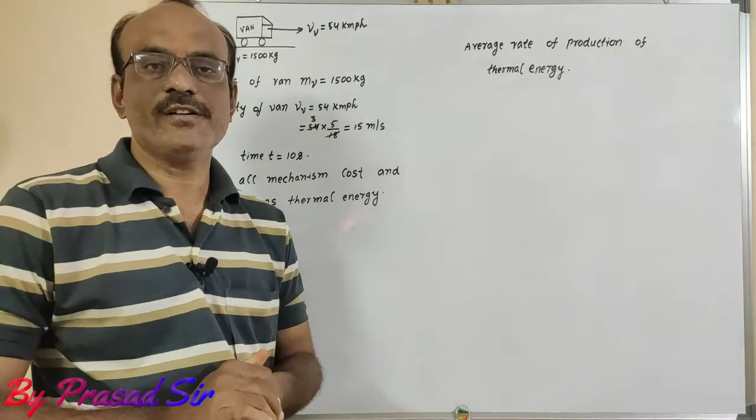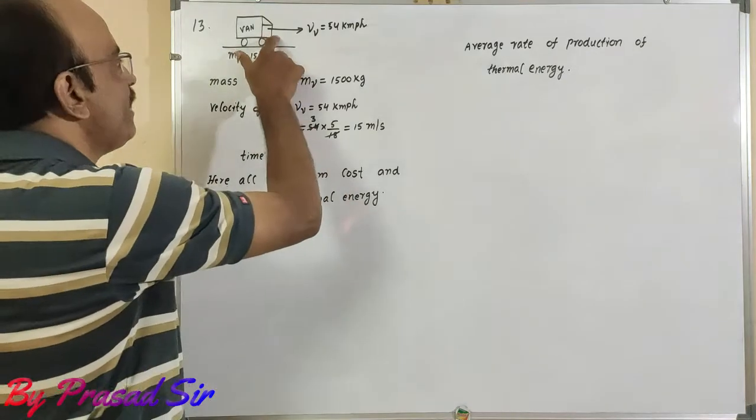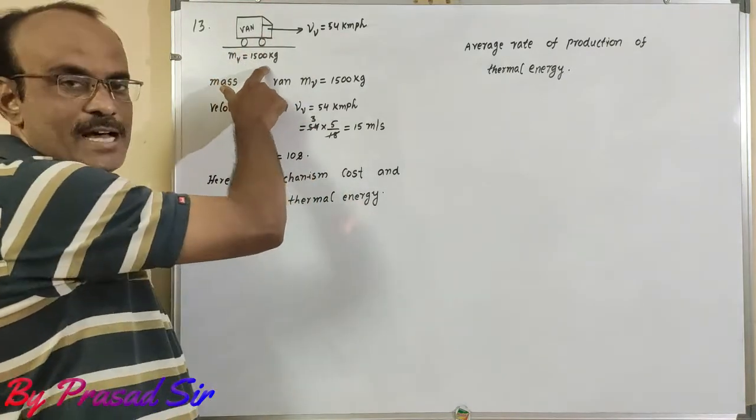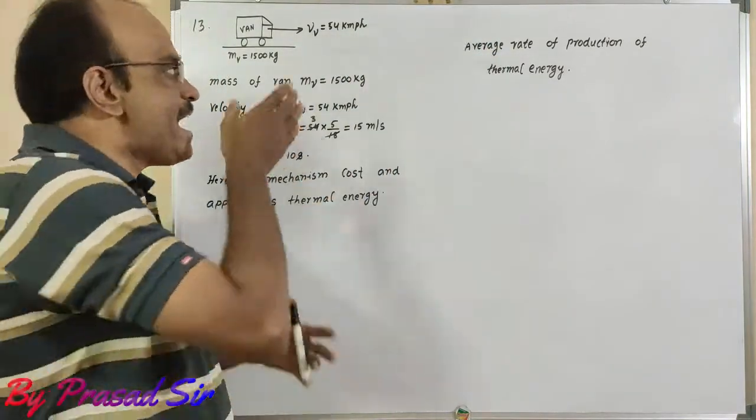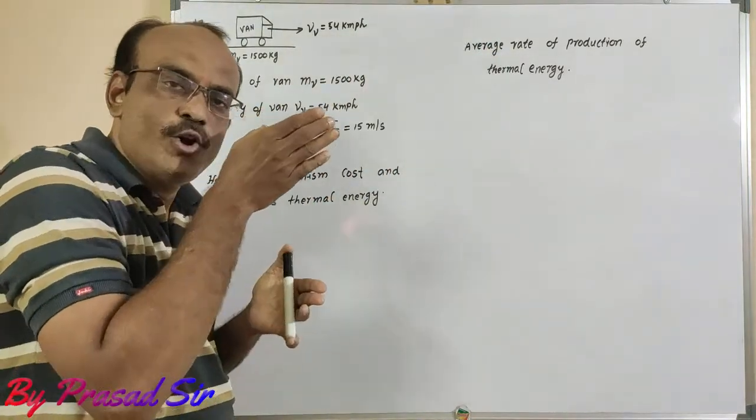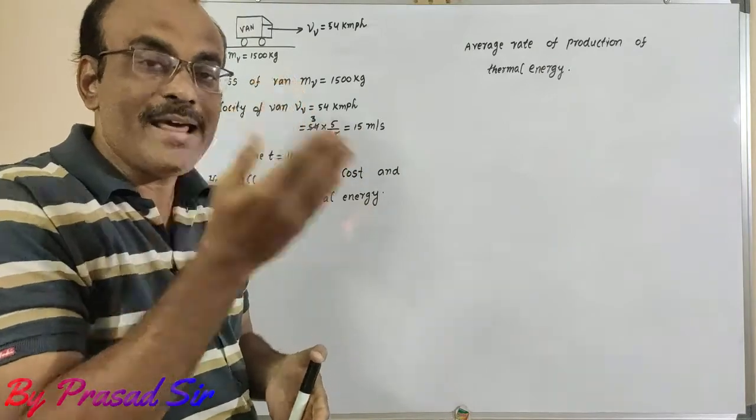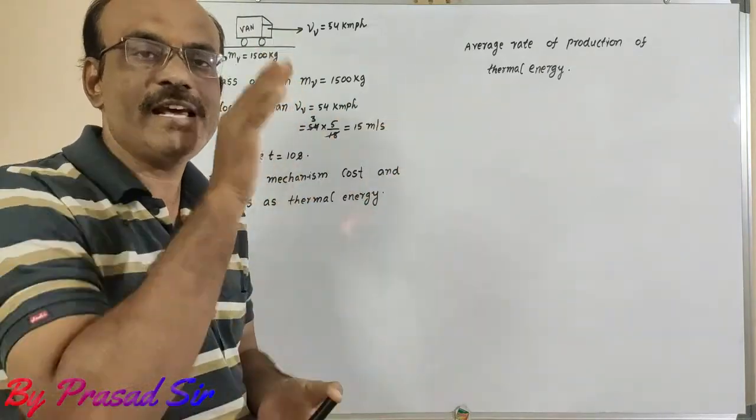Here, in this question, given a van of mass 1500 kilograms is traveling with a speed of 54 kilometer per hour. If the van is traveling with 54 kilometer per hour, after applying the brakes, what happens? It will stop.